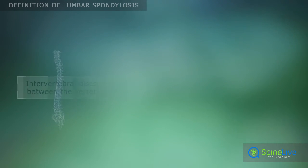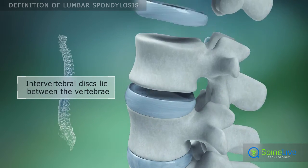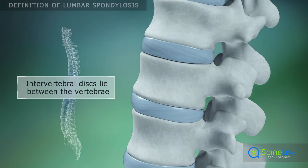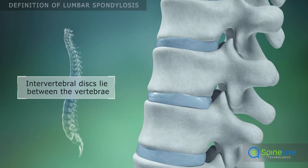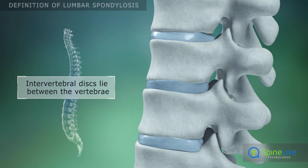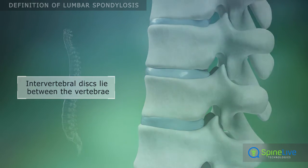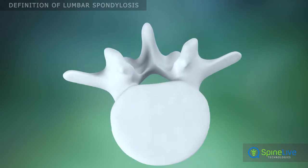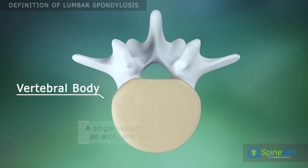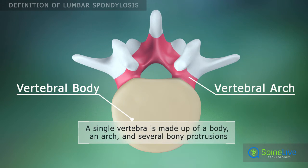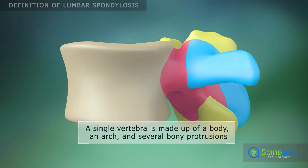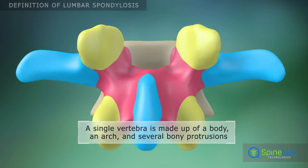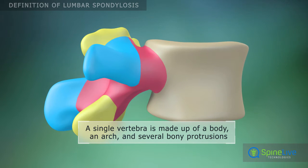The spine is made up of 33 individual bones called vertebrae, separated by intervertebral discs. A typical lumbar vertebra consists of a body and a vertebral arch, which has several processes for articular and muscular attachments.